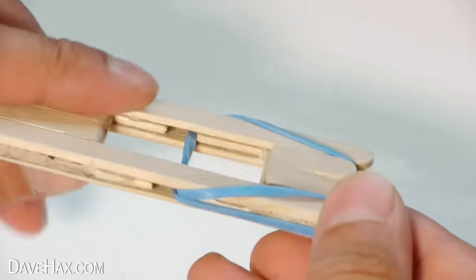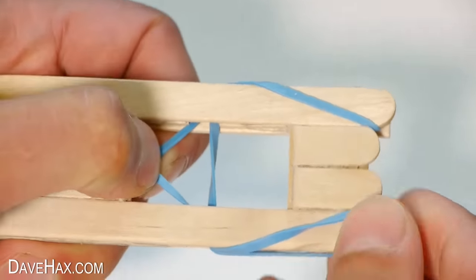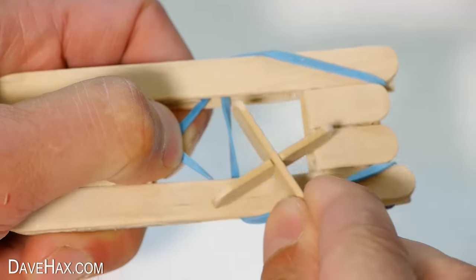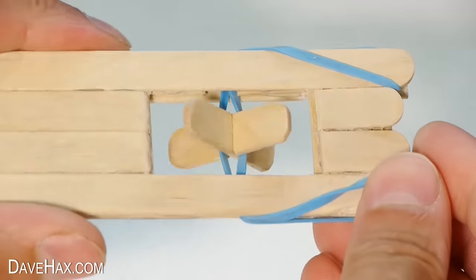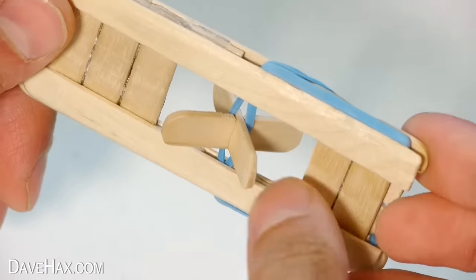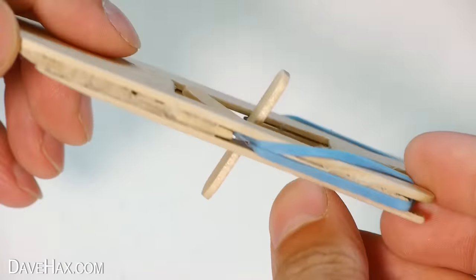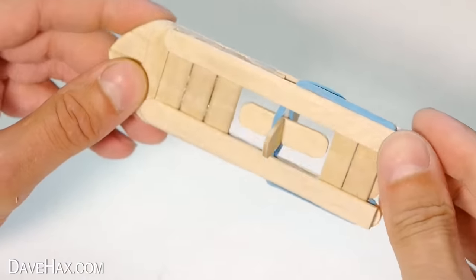And we're now ready to fit the paddle. Just open up the bands and slide it in between like this. And that's our homemade paddle boat complete. Pretty cool, huh?